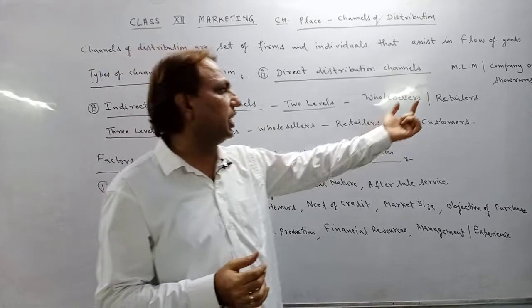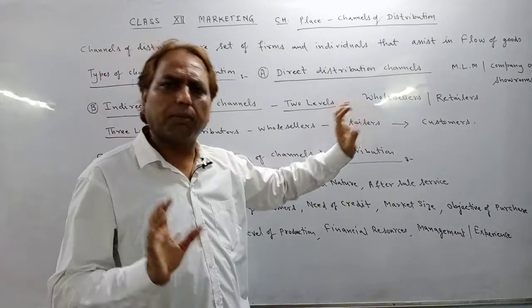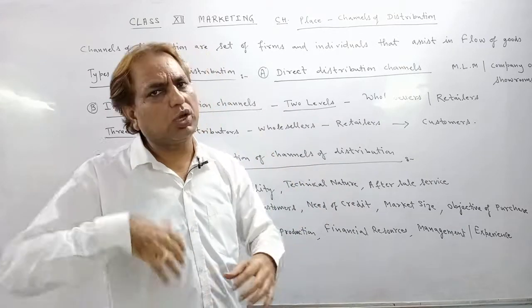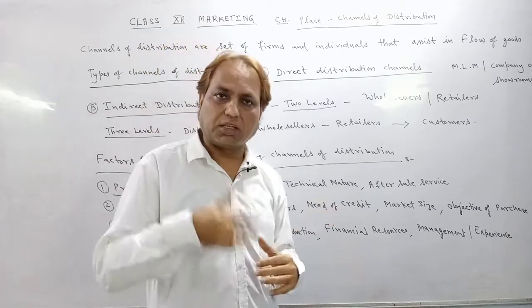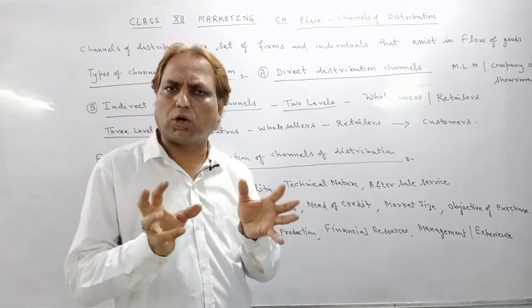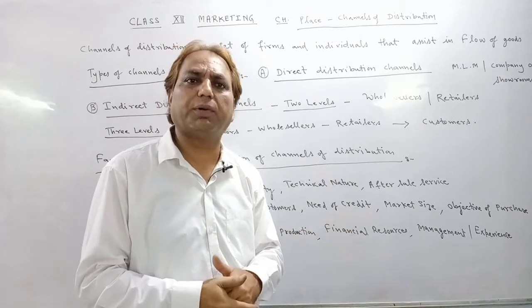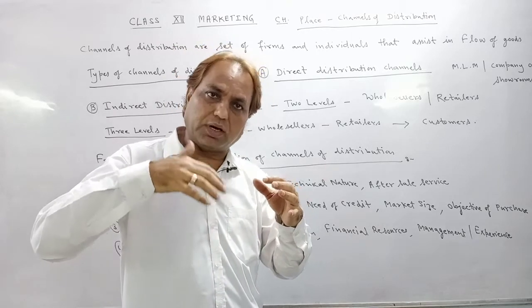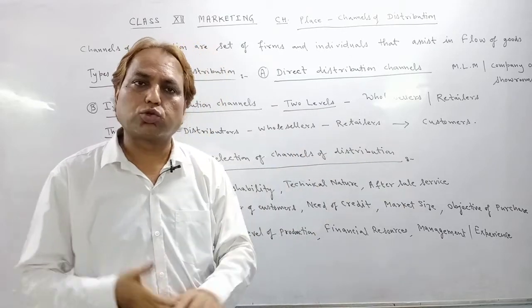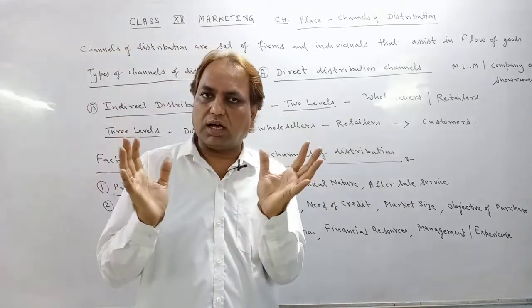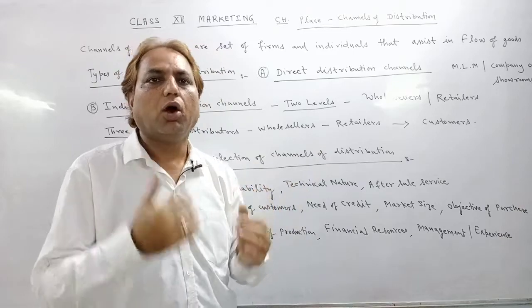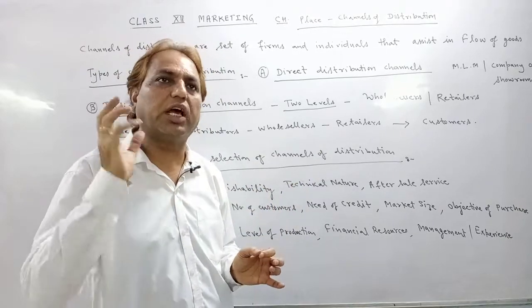Wholesalers buy products in bulk from the large company and sell to retailers, who then sell to customers. Wholesalers work on very low margins because their business volume is higher. Examples of wholesale markets include Sadar Bazaar and Chandni Chowk. Retailers are connected directly to customers, while wholesalers generally don't deal with end consumers. This is the two-level channel of distribution.